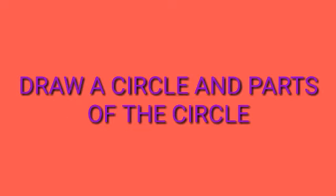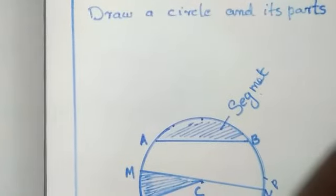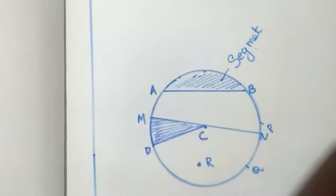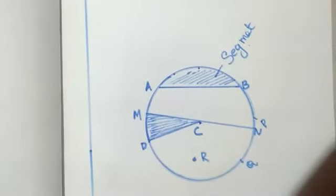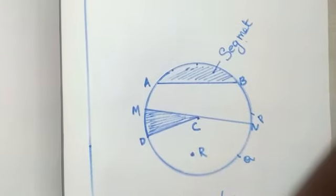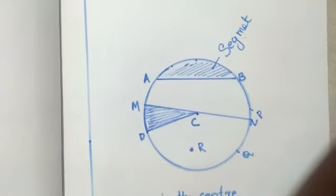Next question, draw a circle and parts of the circle. Question is to draw a circle and its parts. So, with the center, see, I draw a circle here. Then, which are the parts? AB is the segment. Shaded portion is the segment.